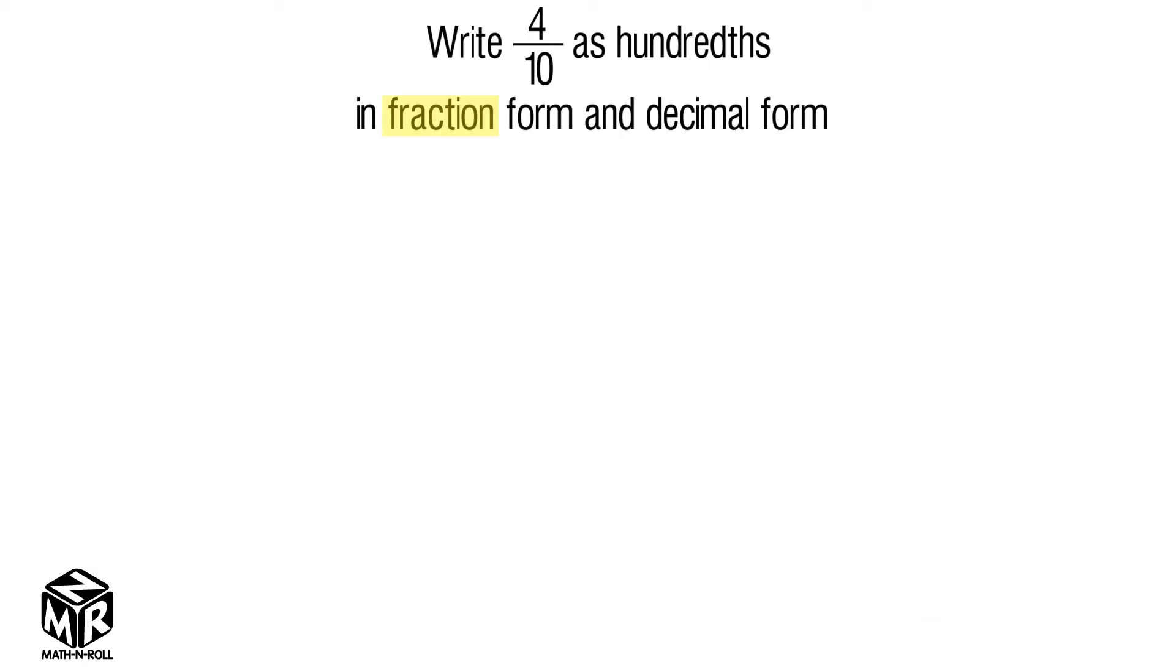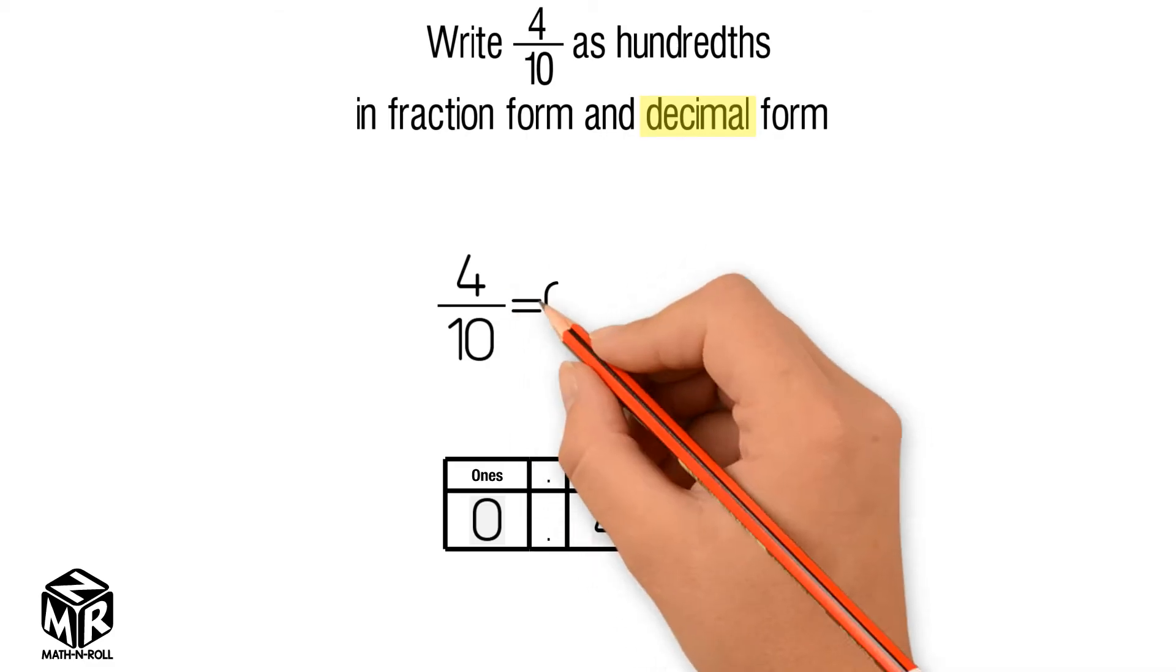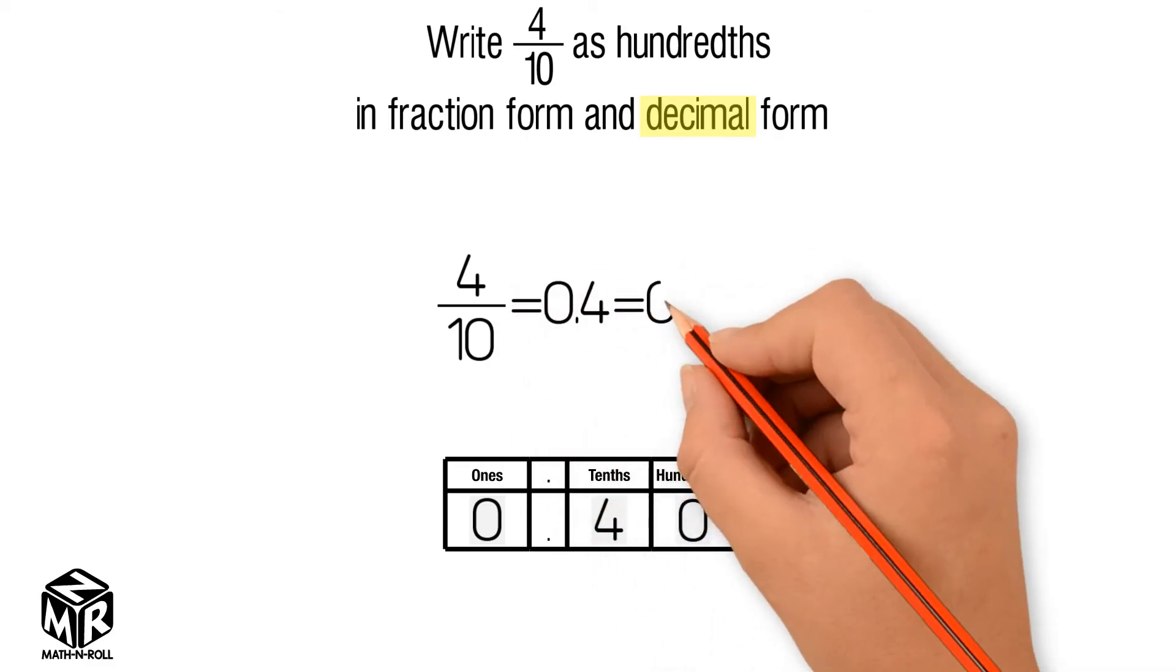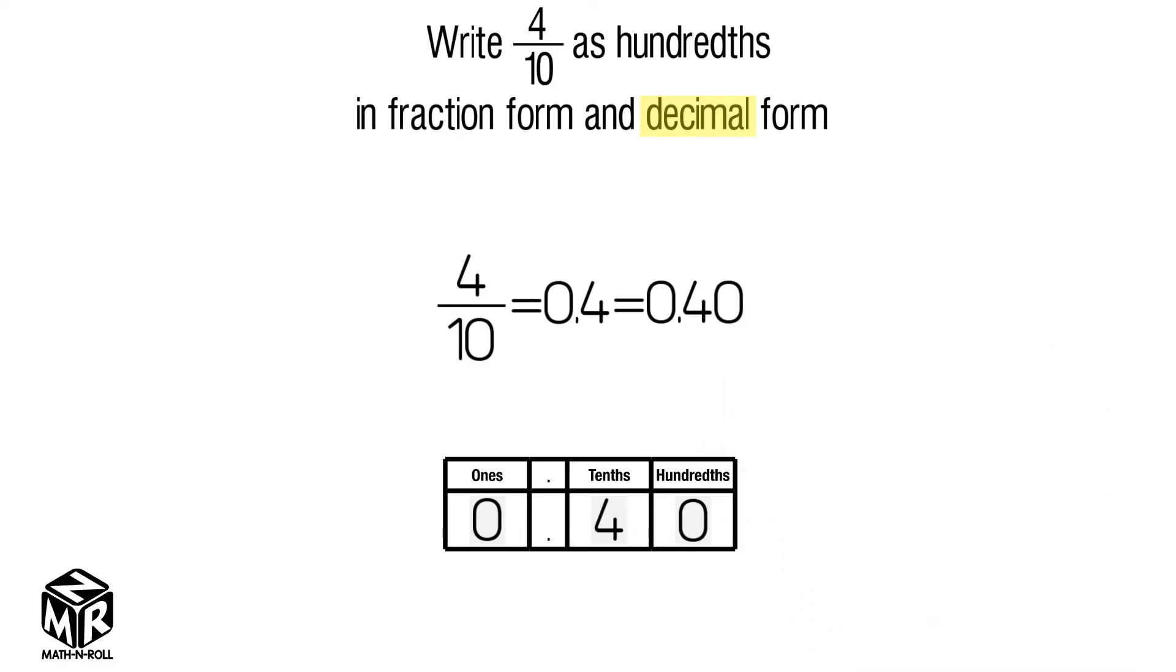Now let's write 4 tenths as hundreds in decimal form using a place value chart. We put the 0 in the ones place, a 4 in the tenths place, and a 0 in the hundredths place. So the fraction 4 over 10 can be written as a decimal as 0.4 or 0.40.